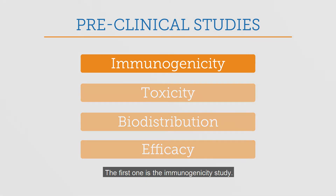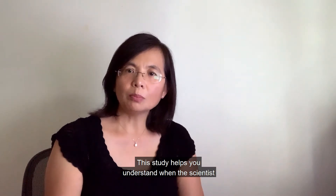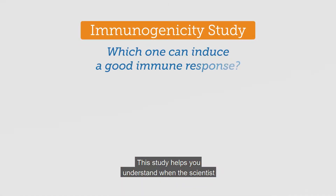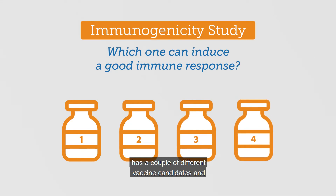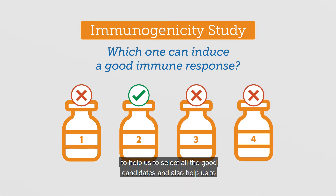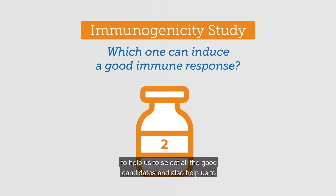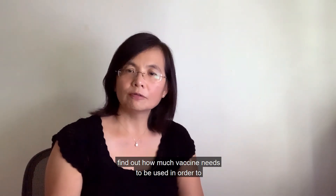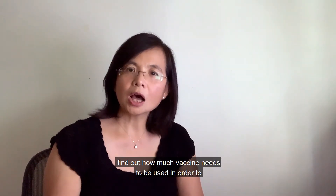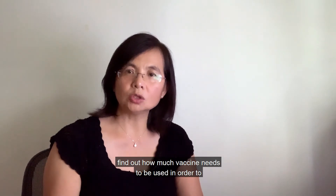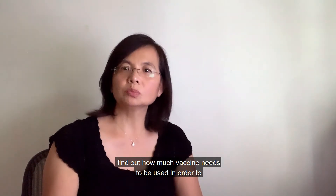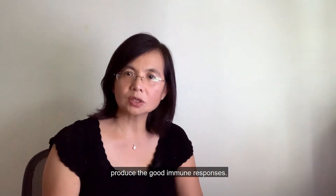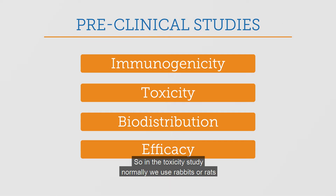The first one is the immunogenicity study. This study helps scientists understand, when they have a couple of different vaccine candidates, which ones to select. It also helps find out how much vaccine needs to be used in order to produce good immune responses.